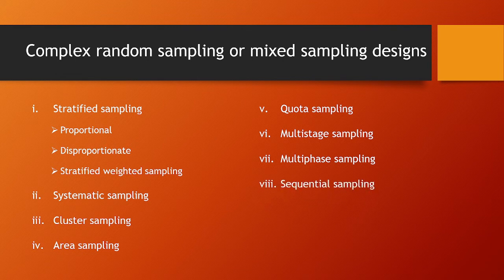The next one is sequential sampling. In sequential sampling, we select a sequence. This type of sampling is adopted in acceptance sampling plans in statistical quality control.